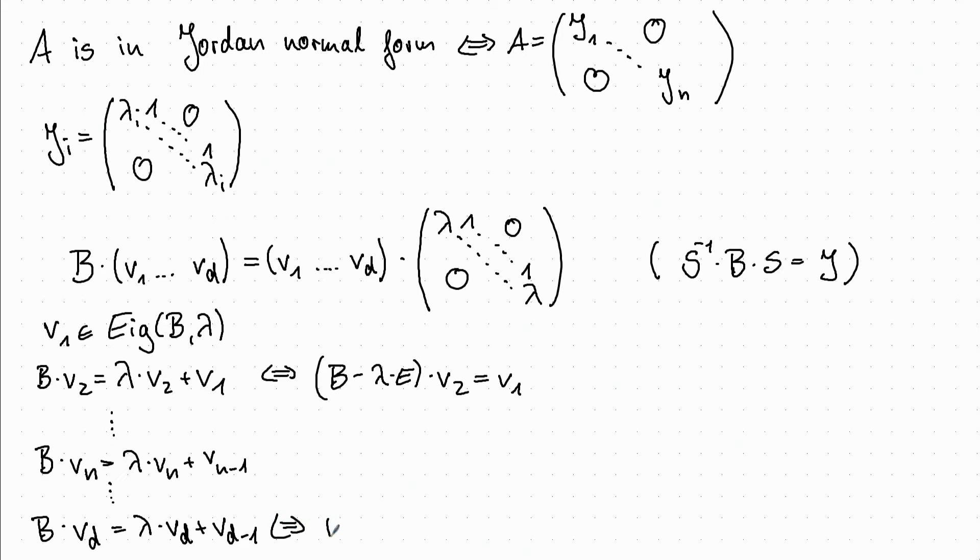And again, this is equivalent to the condition B minus lambda times the unit matrix times Vd is equal to Vd minus 1.